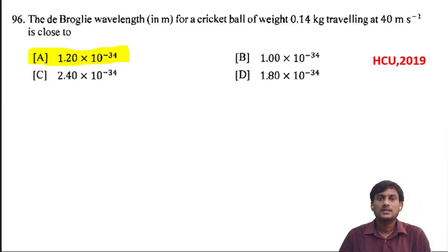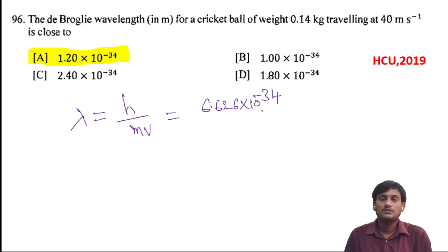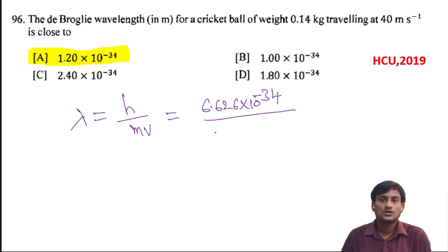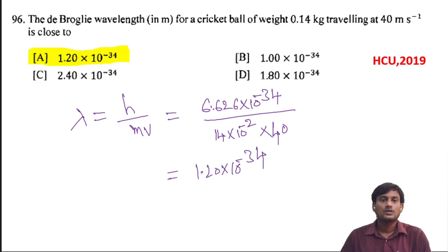The De Broglie wavelength for a cricket ball of mass 0.14 kg traveling at 40 m per second is close to. The De Broglie equation: λ equals h divided by mv. H is 6.626 into 10 to the power minus 34 kg·m²·s⁻¹. M is 0.14 kg (written as 14 into 10 to the power minus 2 kg) and v is 40 m/s. When you simplify, you get 1.20 into 10 to the power minus 34 m. This is the correct option.